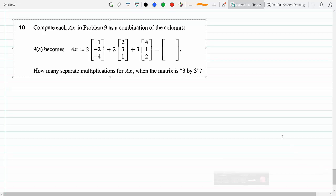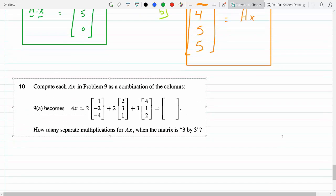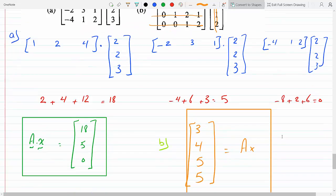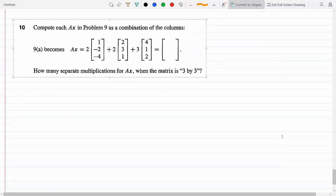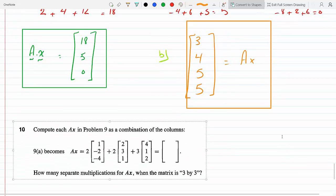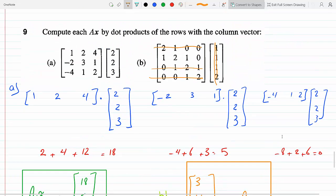Here we need to compute AX as in problem 9, which is this problem above. But instead of doing it as a combination of the columns, in other words what I was doing before, I was multiplying this times this. So say that again.